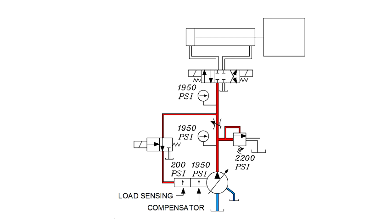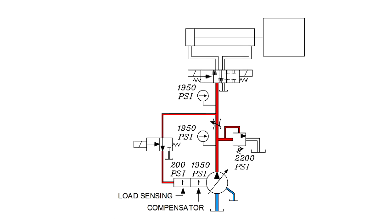When the directional valve is shifted to extend the cylinder, pressure will drop downstream of the flow control to what is required to move the load, 700 psi. The 700 psi load pressure augments the 200 psi setting of the load sensing valve, causing the pump to stroke only enough to generate 900 psi.